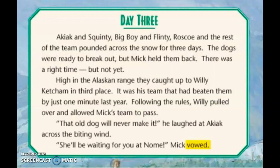Let's look for clues in the text to see if we can find out who is telling this story. The book is called Akiak — maybe it would make sense that this story is told from Akiak's point of view. But then, why would it say at the beginning 'Akiak and all those other dogs pounded across the snow'? If Akiak was really telling the story, he wouldn't refer to himself as Akiak. Maybe Mick could be telling the story — he's the one in charge of the whole sled dog team. But then we notice it says 'Mick's team to pass' and 'Mick vowed.' If Mick was really telling the story, it seems like it would say 'I did these different things.' So I don't think he's telling the story either.